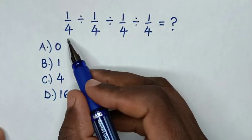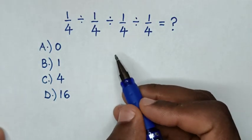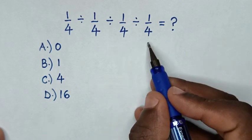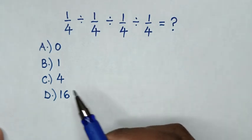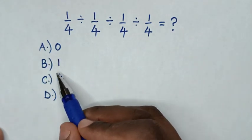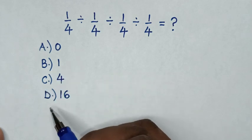Hello! How to solve 1 over 4 divided by 1 over 4 divided by 1 over 4 divided by 1 over 4 by selecting between the answers: A, 0, B, 1, C, 4, D, 16.